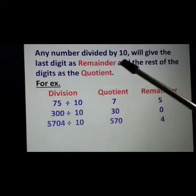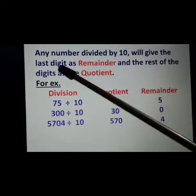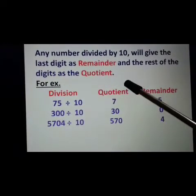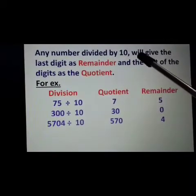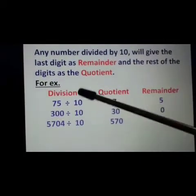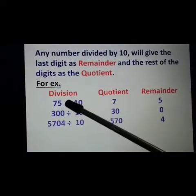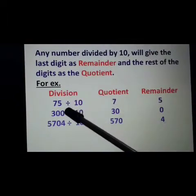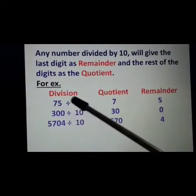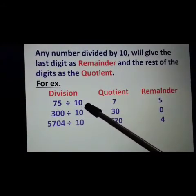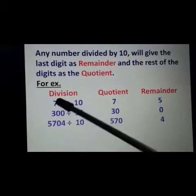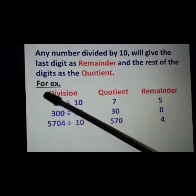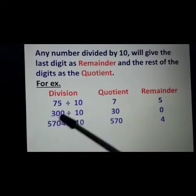Now, any number divided by 10 will give the last digit as remainder and the rest of the digits as the quotient. If we divide 75 by 10, the last digit 5 is at the ones place — this will be the remainder, and the rest of the digit, 7, will be the quotient.